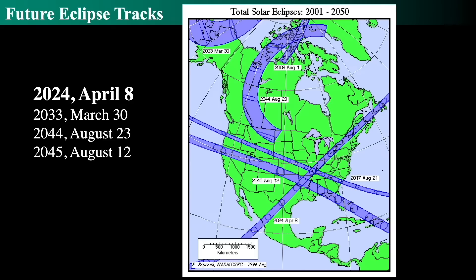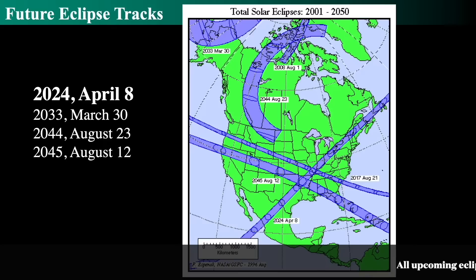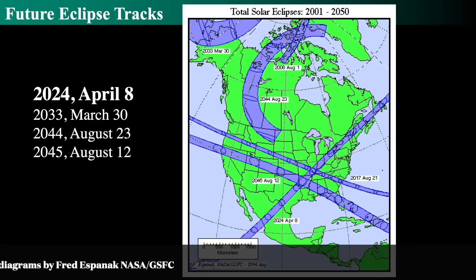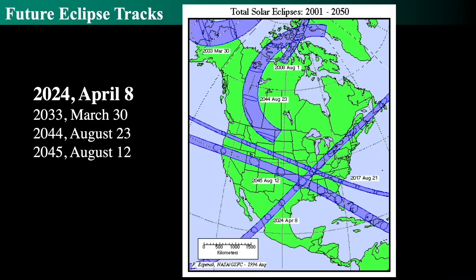Let's look at some future eclipse tracks. There's one coming up on April 8th, 2024 — that won't be far from when I'm recording this, but you may be watching this well after. In any event, that will be a huge event. If you miss it, there will also be ones in 2034, 2044, and 2045. There's another one nine years later, then 10 years after that, and then right one year later again.